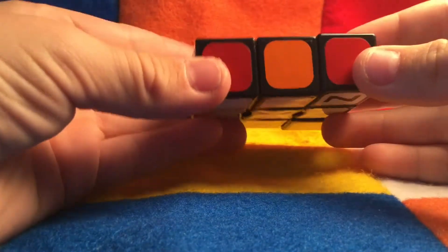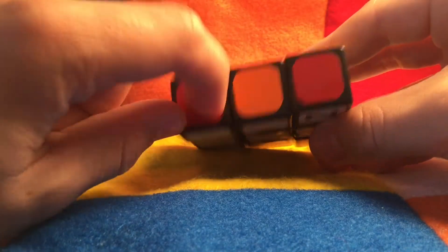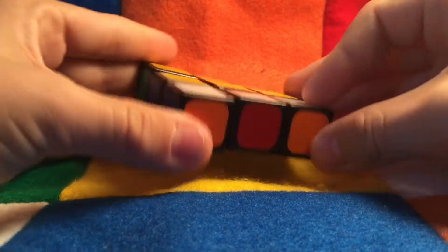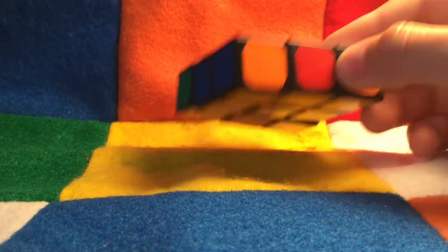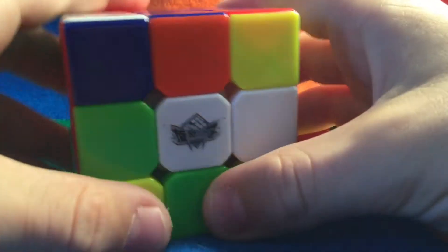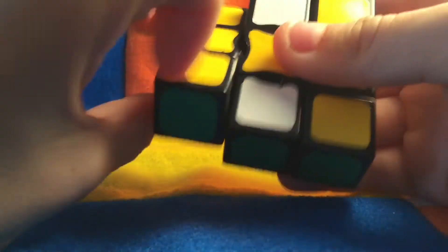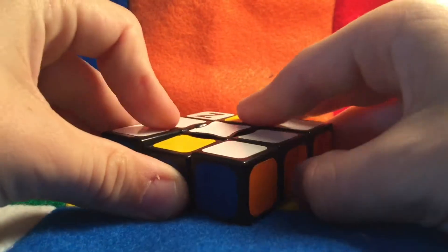So the first step that you are going to do is you are going to get this outline solved. It's really simple, there's no algorithm to it, just like when you are solving a 3x3, there is no algorithm to get the first white side. Basically, it's really easy to just solve this outline here. Very easy. And that is the first step.